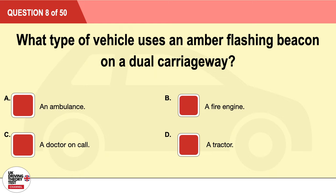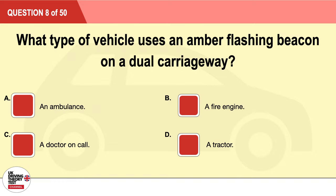Question 8: What type of vehicle uses an amber flashing beacon on a dual carriageway? A: An ambulance. B: A fire engine. C: A doctor on call. D: A tractor. The correct answer is D: a tractor.